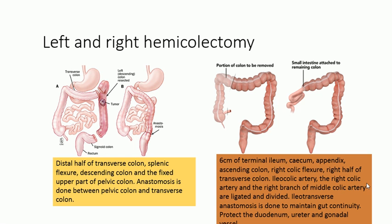Left hemicolectomy is performed when there is a tumor or mass on the left colon. The no-touch technique is used — blood vessels are ligated first so tumor micro-masses do not travel through the bloodstream and cause seeding. In left hemicolectomy, the distal half of the transverse colon, splenic flexure, descending colon, and the fixed upper part of the pelvic colon are removed.